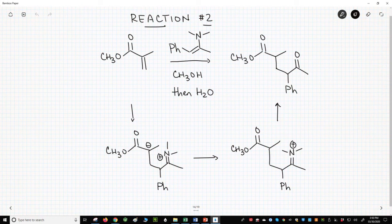Reaction number two. The Michael acceptor is an alpha-beta unsaturated ester instead of a ketone. The Michael donor is an enamine.